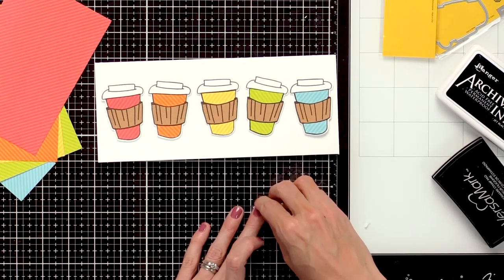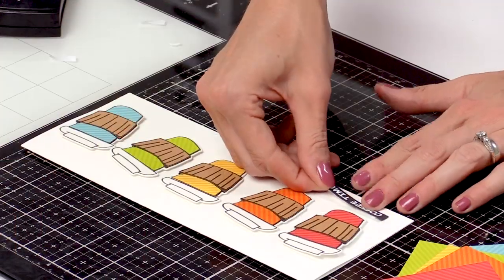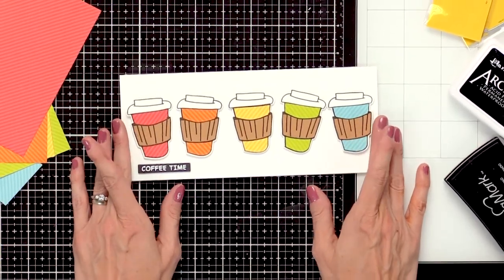Just remove the backing on the sentiment and stick it down. And that will complete the paper piecing rainbow coffee cup card.